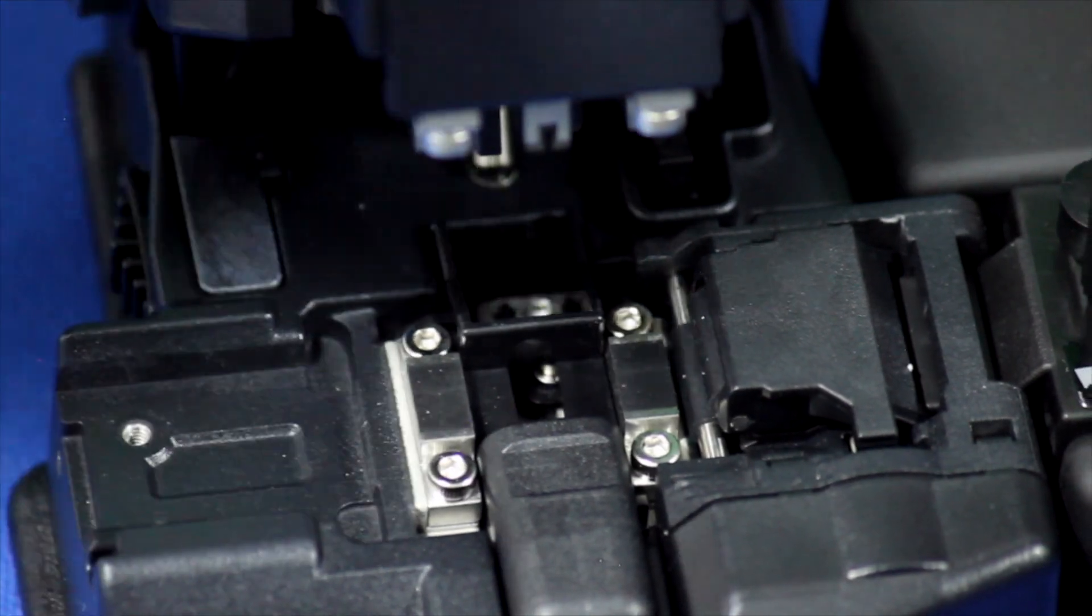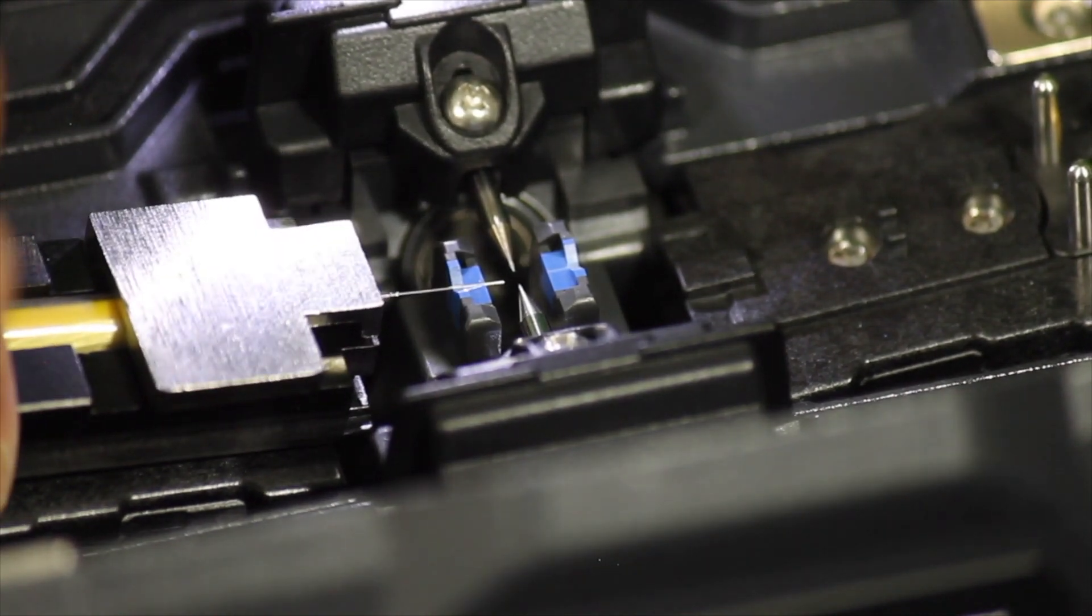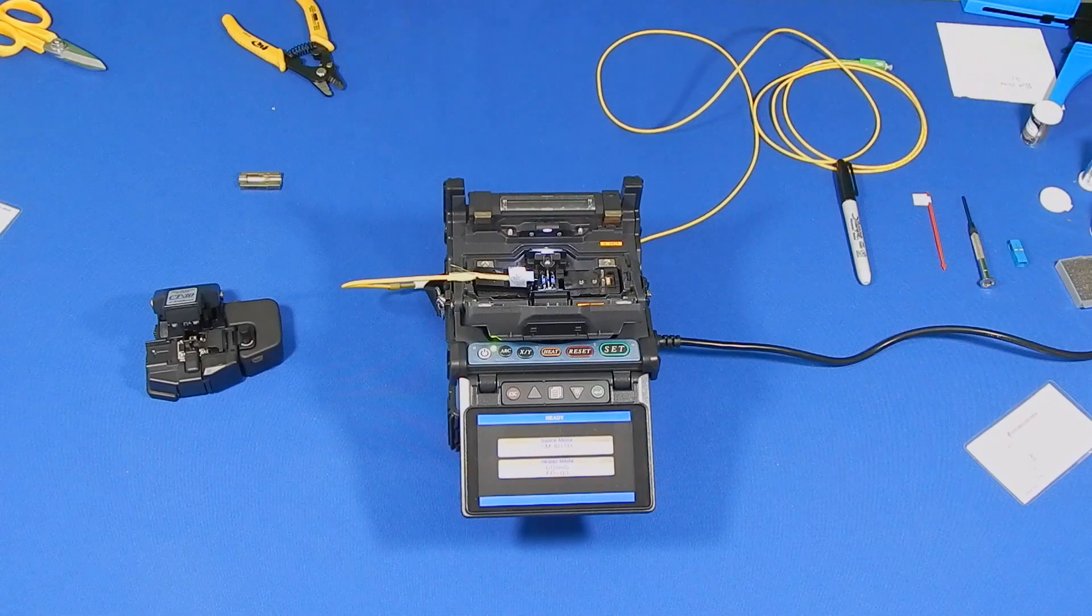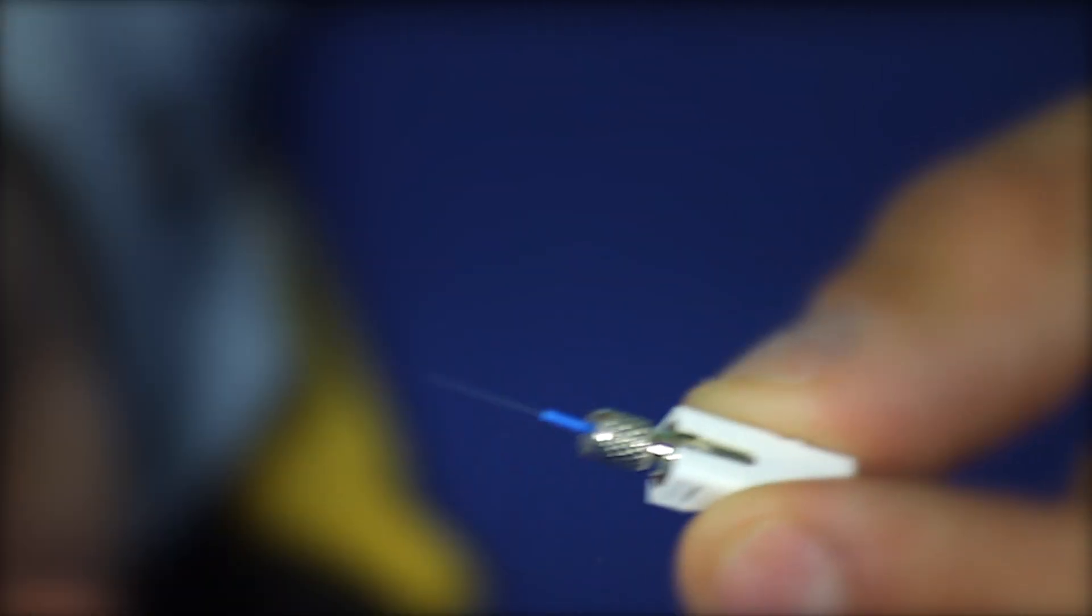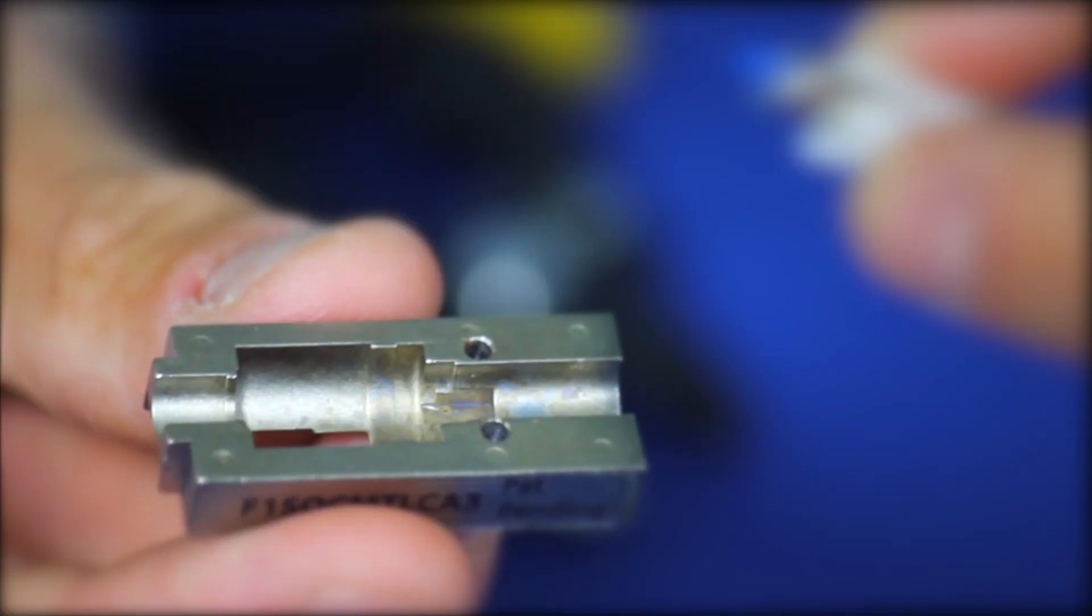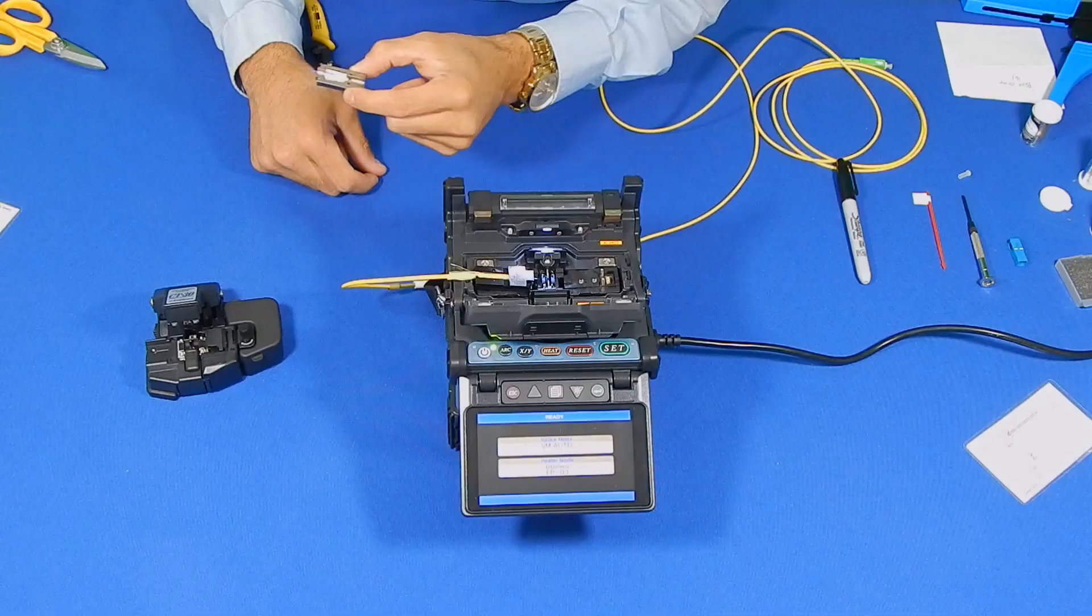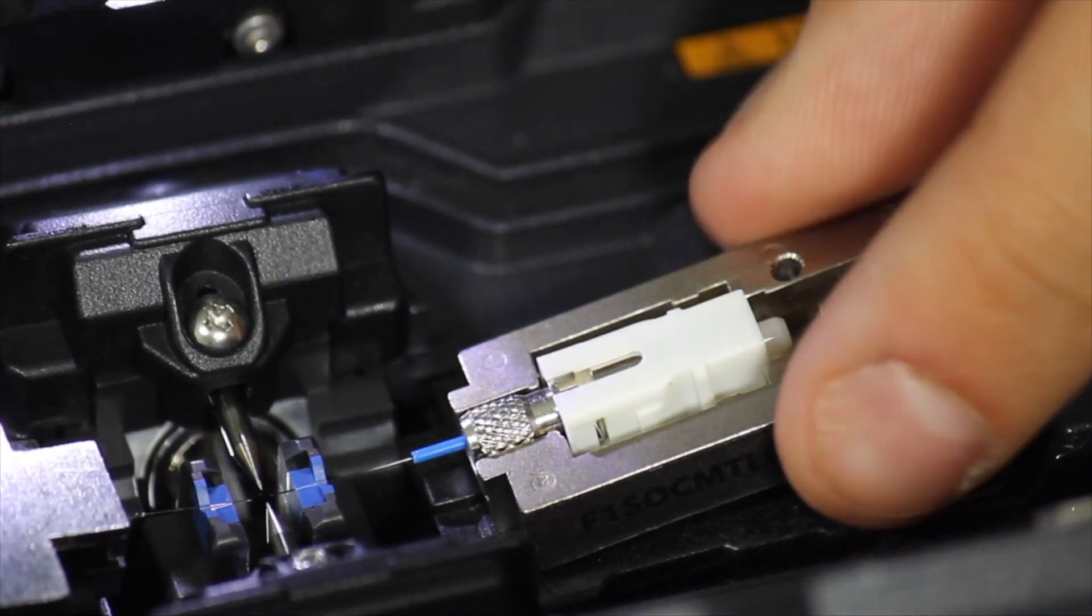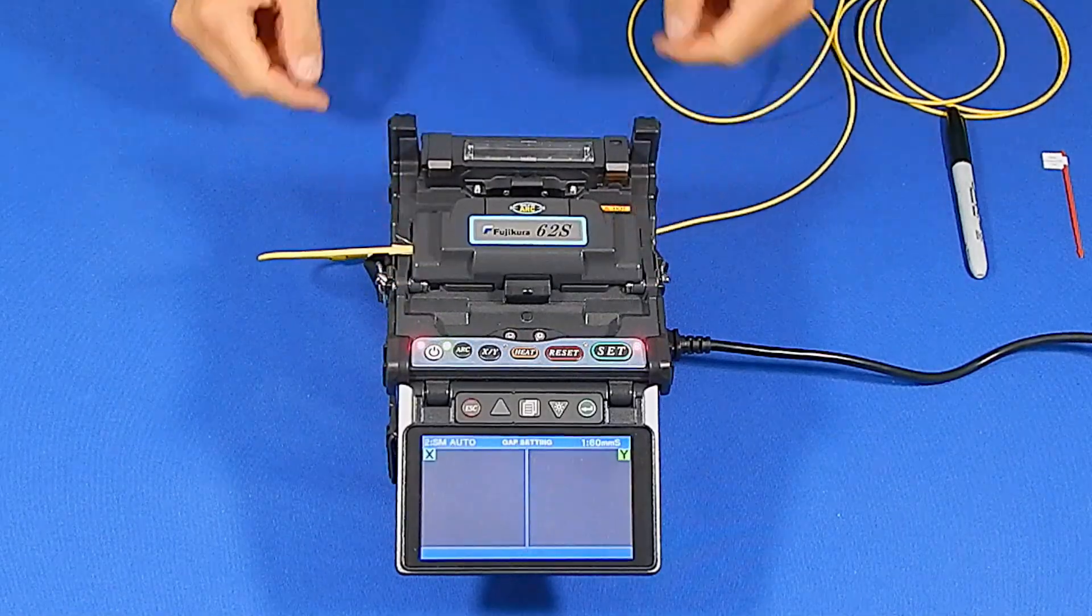Once the fiber is cleaved, load the holder into the splicer. The cleaved fiber should rest inside the V-groove. Remove the dust cap and protection sleeve from the SoC and load it into the SoC holder. Be careful not to nick the end of the fiber. Place into the right side of the fusion splicer.